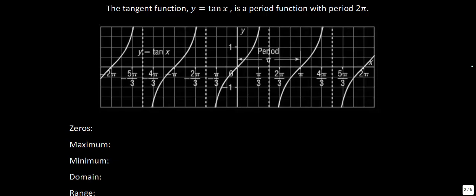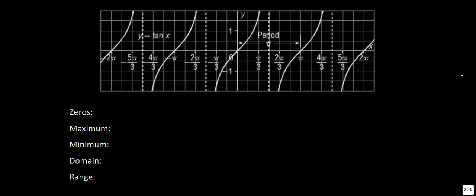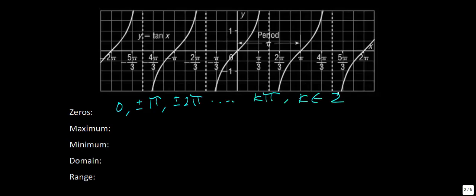Now let's look at the tangent function. One difference is that the graph doesn't look similar to sine or cosine, and tangent has a period of π. Taking two corresponding points on the tangent graph indicates a period of π. Looking at its zeros: the tangent function goes through 0, π, 2π, −π, −2π — so the zeros are kπ, where k is an integer.